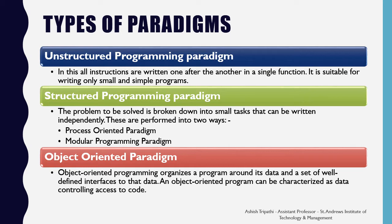In the structured programming paradigm, the problem to be solved is broken down into small tasks which are written independently. There are two types of structured programming paradigm: process-oriented and modular programming. The object-oriented paradigm refers to the latest way of solving a problem. In this, a program is considered as a collection of data and functions. The data is acted upon by the functions, and the data controls the access to the code.